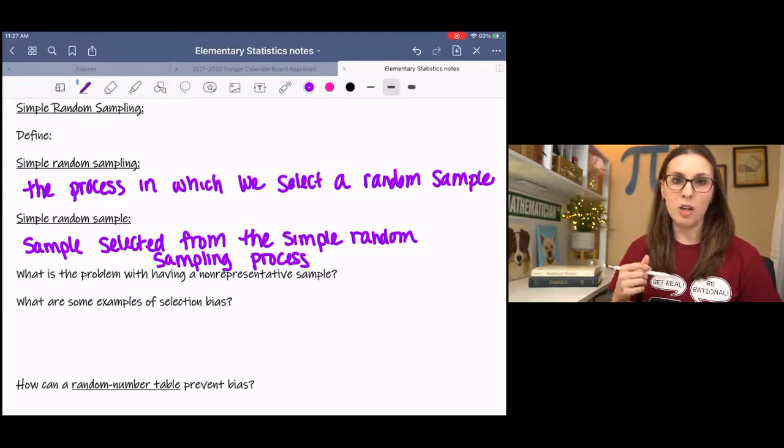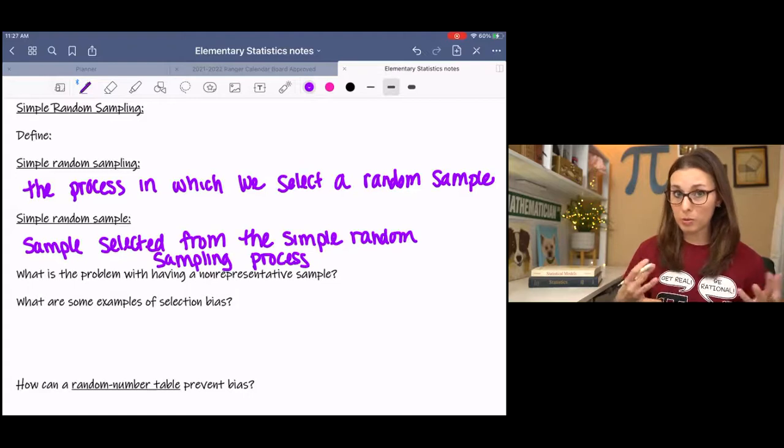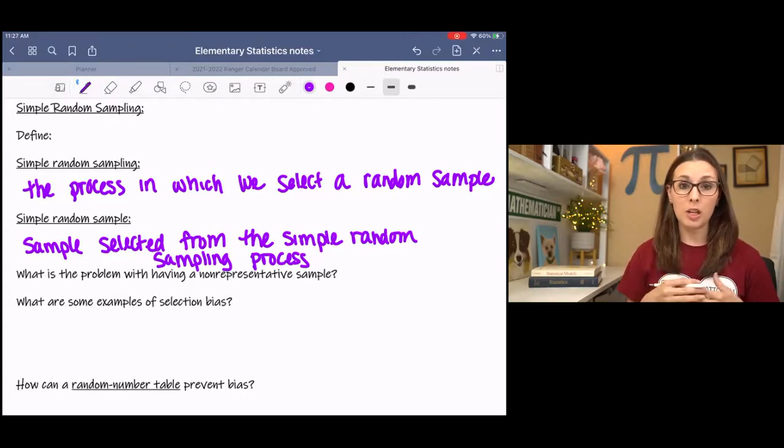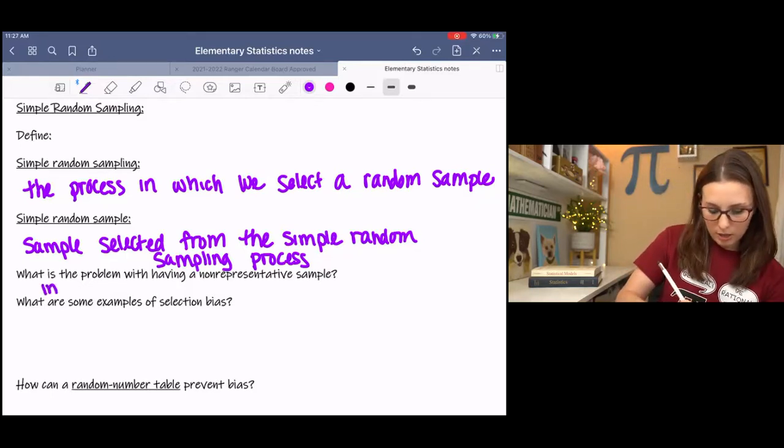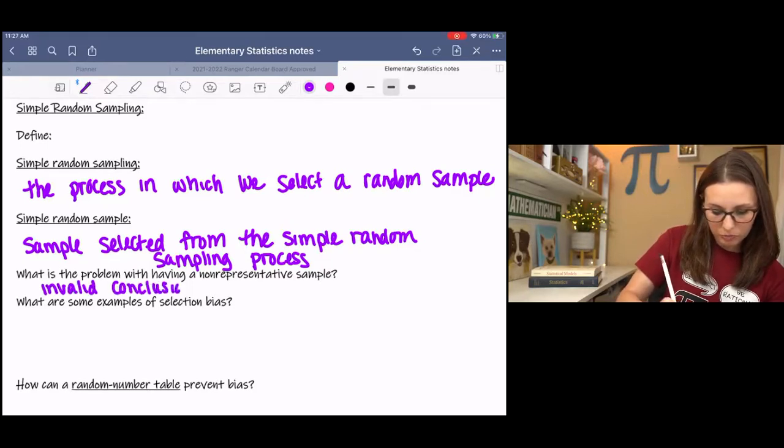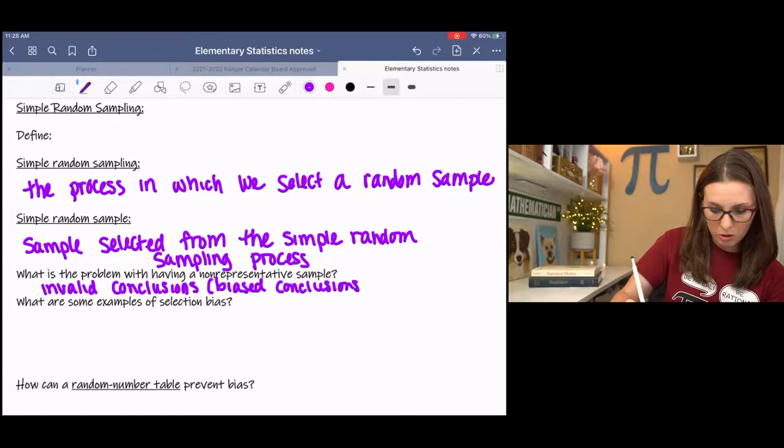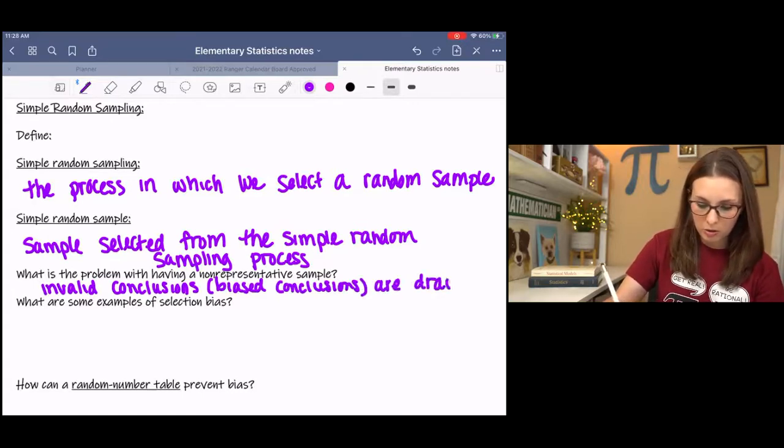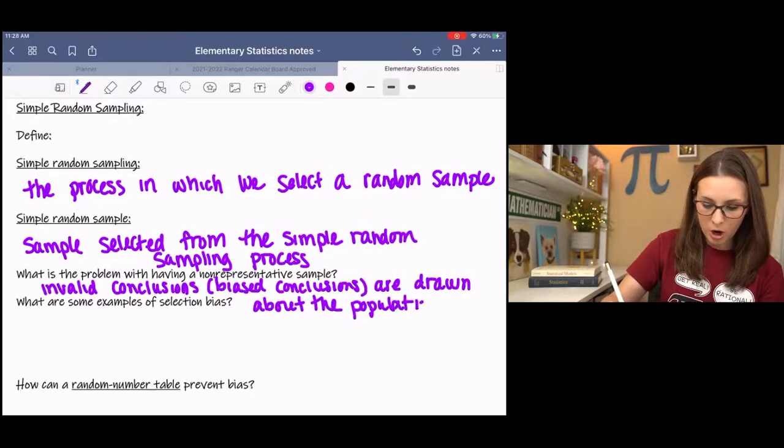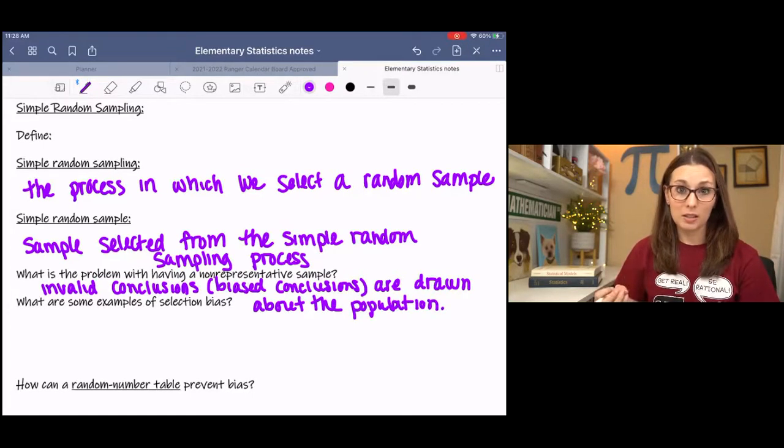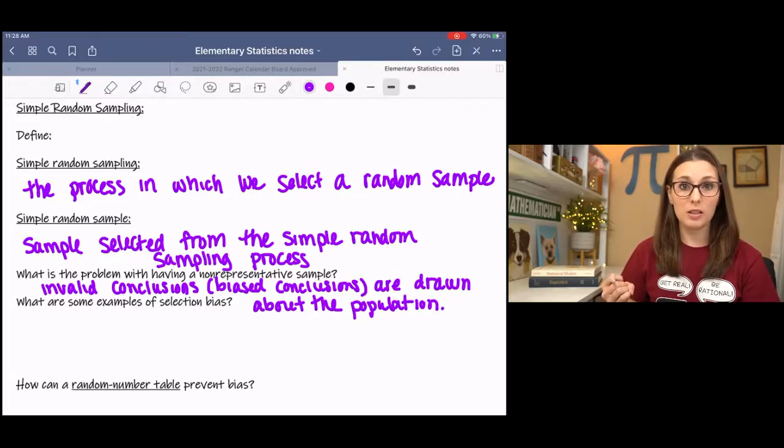What is the problem with having a non-representative sample? This is probably pretty logical. If you have a non-representative sample, then you cannot draw valid conclusions about your population. So, invalid conclusions or biased conclusions are drawn about the population. A non-representative sample creates bias. And this is really important as you read studies or read articles that you look for these biases in their methodology.